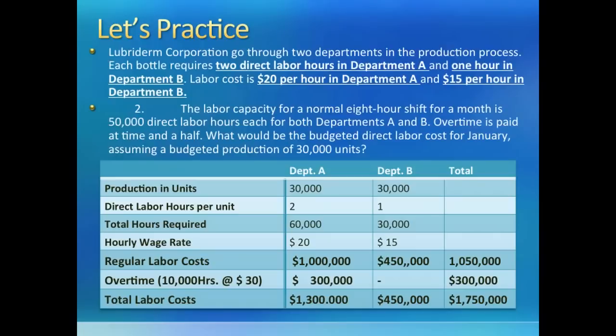Everything is the same except that we pay for the additional 10,000 hours in Department A. Total hours required in Department A are 60,000, but we have the upper bound of 50,000 direct labor hours to be paid at the normal rate. The extra 10,000 hours will be paid at a time and a half of $20, which would be $30 an hour. So the total direct labor cost is $1.75 million, higher by $100,000 due to the overtime rate on the 10,000 hours.